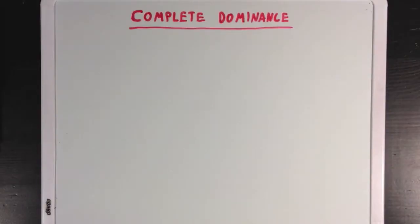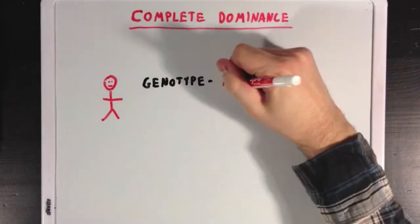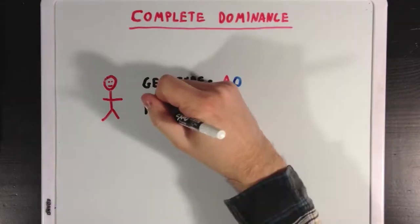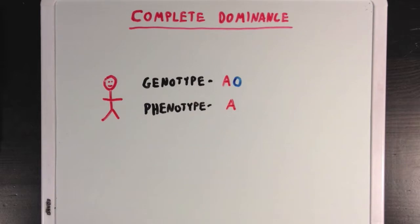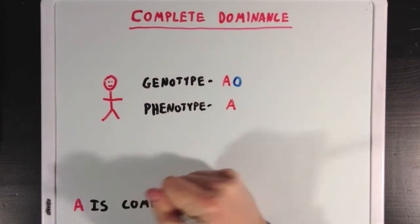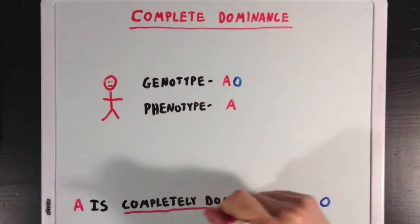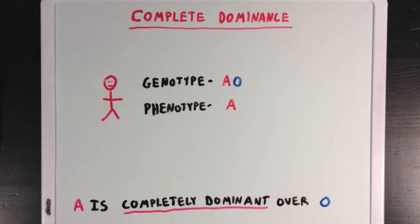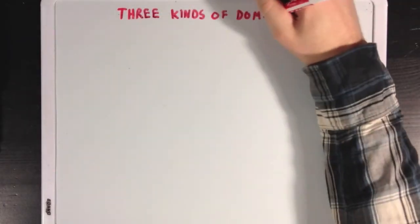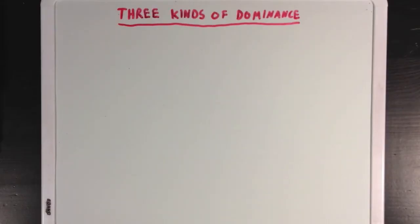The example I just gave was an example of complete dominance. So if a person had genotype AO, since the phenotype is just blood type A, it means the A allele is completely dominant over the O allele, and only the A allele from the genotype is expressed in the phenotype. There are actually three different patterns of dominance that I want you to be familiar with.